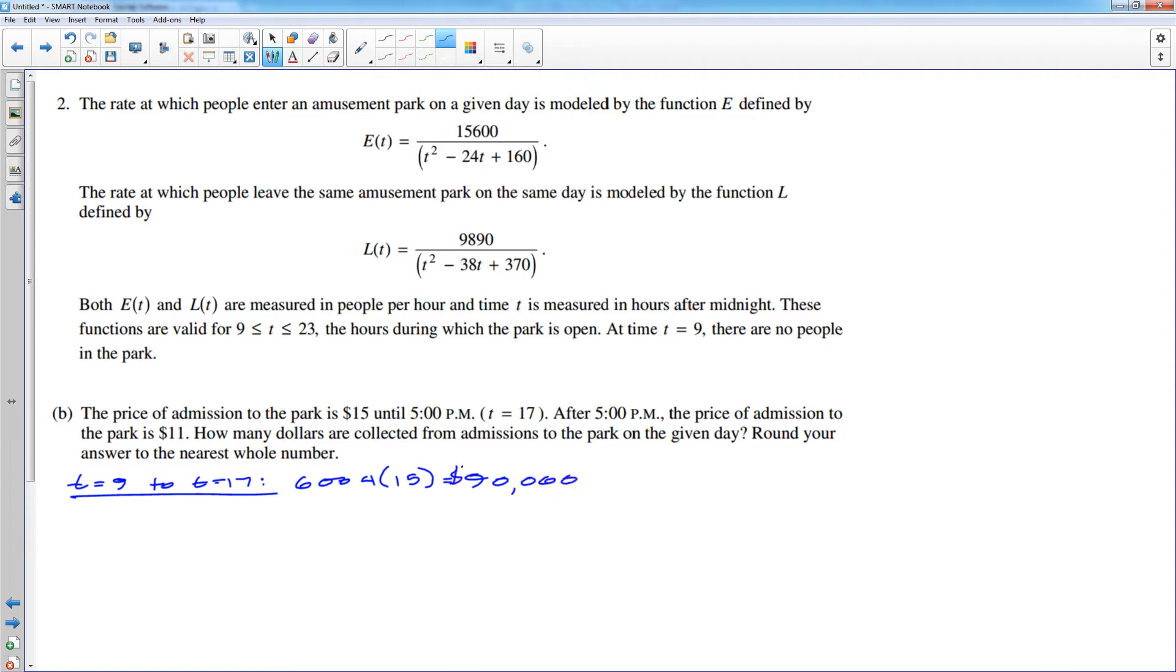And that turns out to be $90,060. So there's the income or the money generated from 9 to 17. But we have to go all the way to closing. And the park closes at 23. So I now need to figure out how much money was made from T equals 17 to T equals 23.